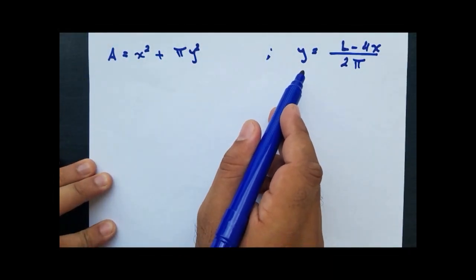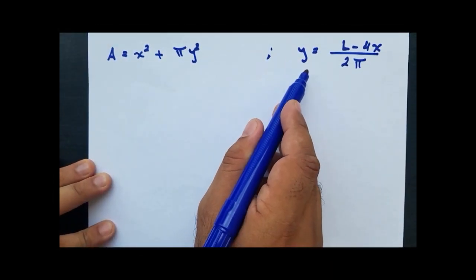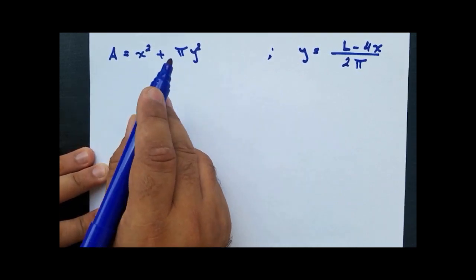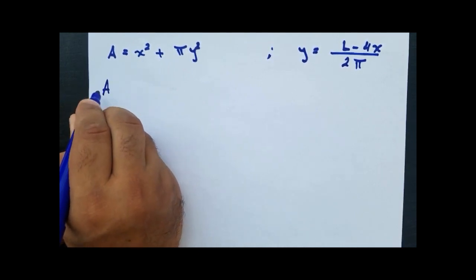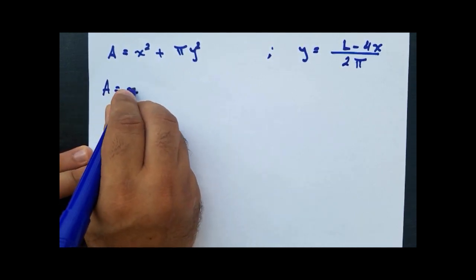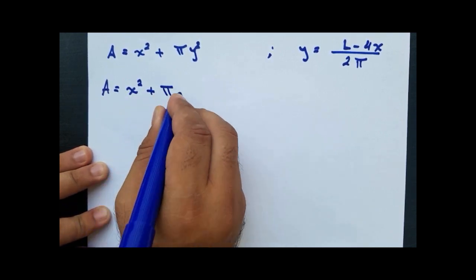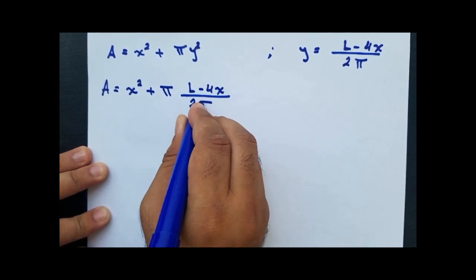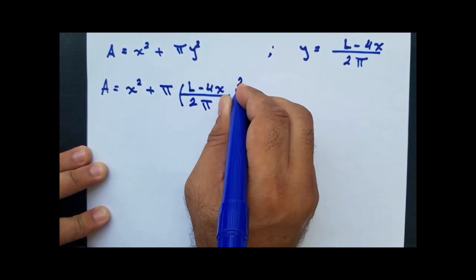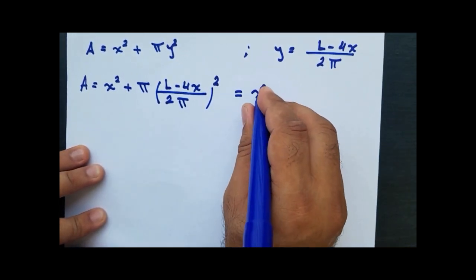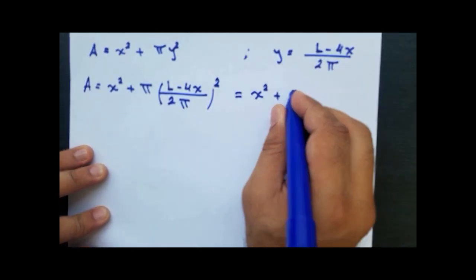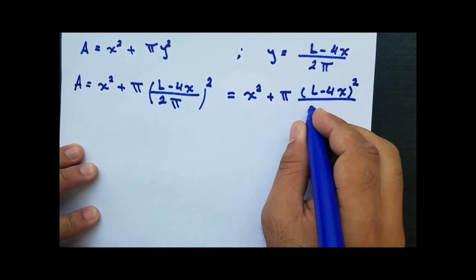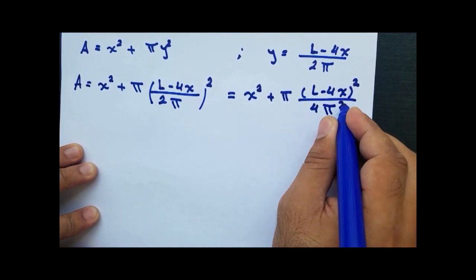Now we substitute the value of y from equation 1 into the equation of the total area, which is x squared plus πy squared. We find that A equals x squared plus π multiplied by (L minus 4x) over 2π, all squared. We can cancel π with π squared, so the total area equals x squared plus (L minus 4x) all squared over 4π.